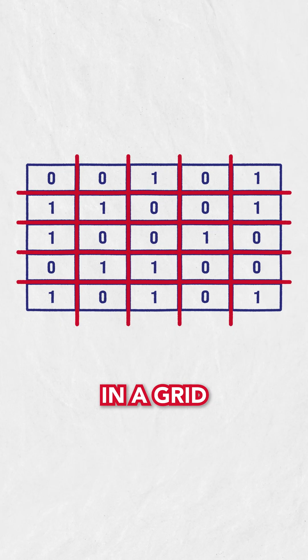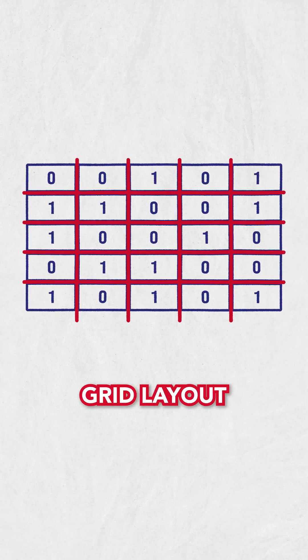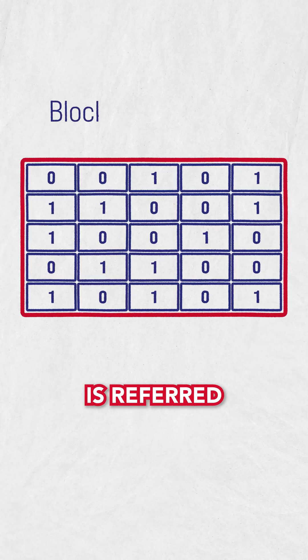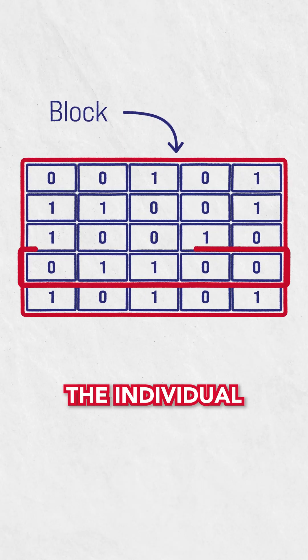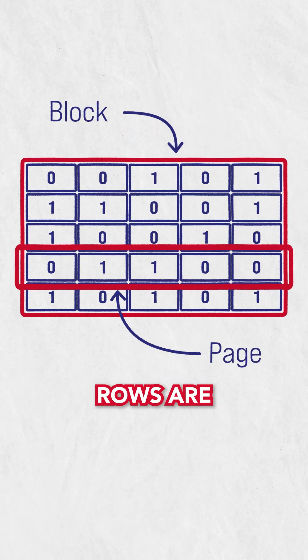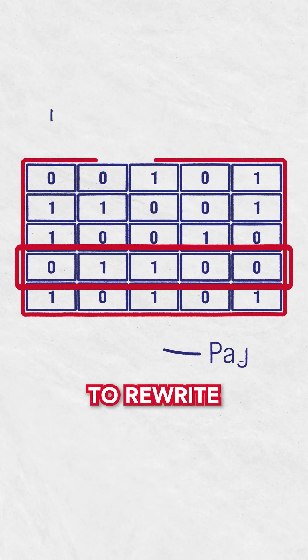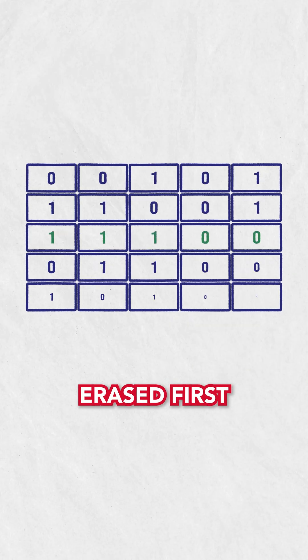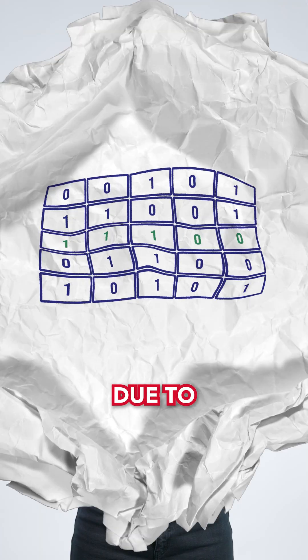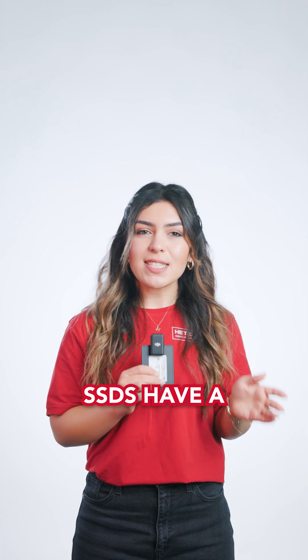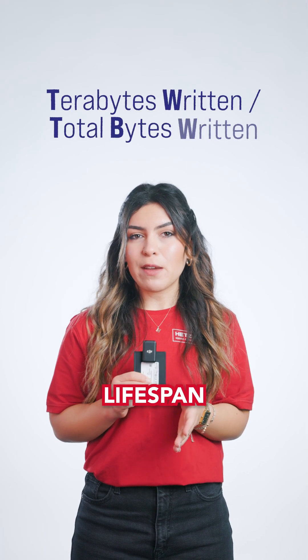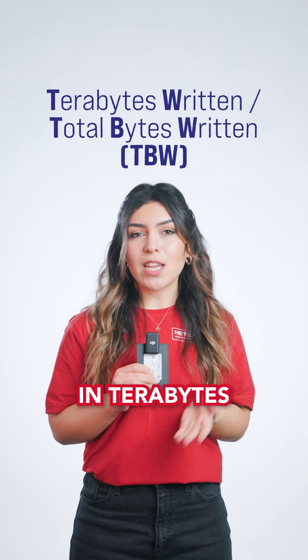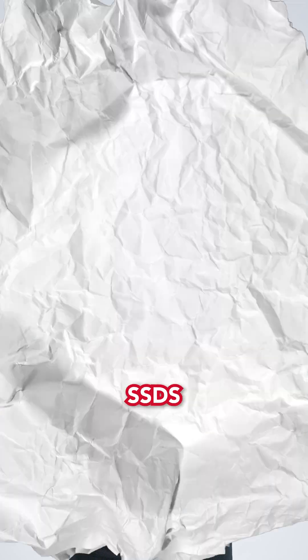NAND flash is organized in a grid. The entire grid layout is referred to as a block, while the individual rows are called a page. To rewrite a page, the whole block has to be erased first. Due to those rewrites, SSDs have a limited lifespan, measured in terabytes written.